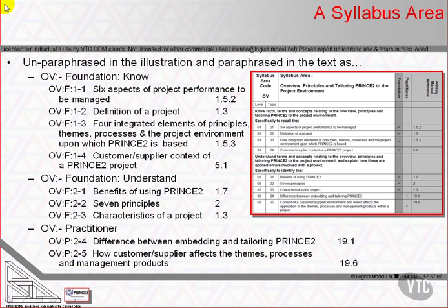On the right hand side is an extract from the syllabus as published, while on the left hand side is the condensed form that forms the background of everything we cover from now on. Note that the syllabus is divided into areas — these are the 15 we have just covered. Also note that syllabus areas are assigned to levels — these are the levels in Bloom's taxonomy that we have just looked at.